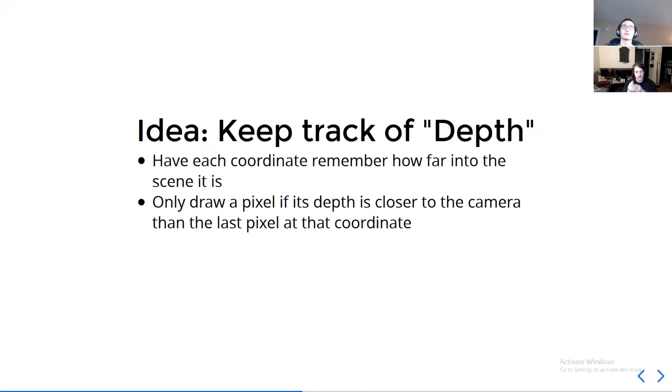So the idea is we keep track of how deep each pixel is in the scene, and then we can easily know, hey, is this pixel in front or behind this other pixel? And if it's behind it, we just throw it away. But if it's in front, we're going to draw that, and it removes the old pixel.